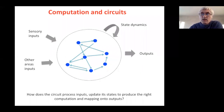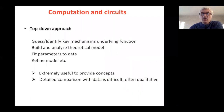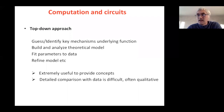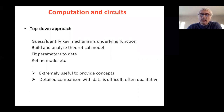There are different strategies to try to answer this question. The first is a top-down approach: we guess or identify the key mechanisms underlying the function, then build a theoretical model, analyze it mathematically, and fit parameters to data. This approach has been followed for decades and is extremely useful for providing concepts — for instance, attractor neural networks — but detailed data comparison is difficult and often only qualitative.